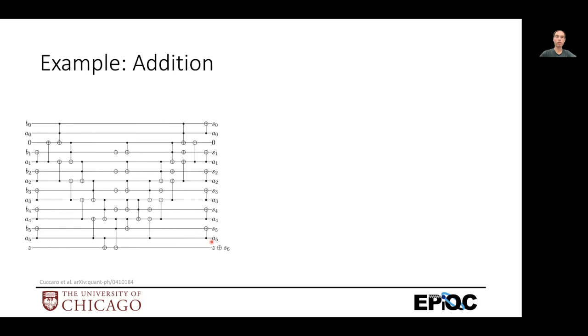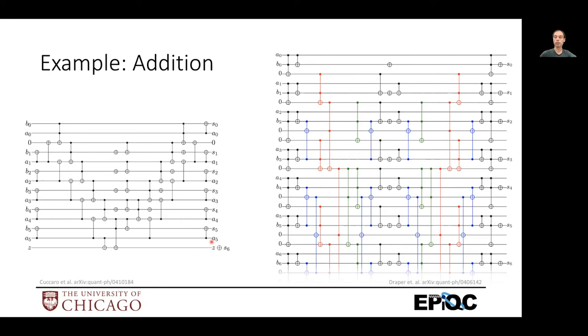So if we have Ancilla, though, we can do this second different adder by Draper. And this stores intermediate results onto Ancilla here, and then it can use these intermediate results to generate more intermediate results on these later Ancilla, like this one. And then collect all these results to then more efficiently add two numbers.